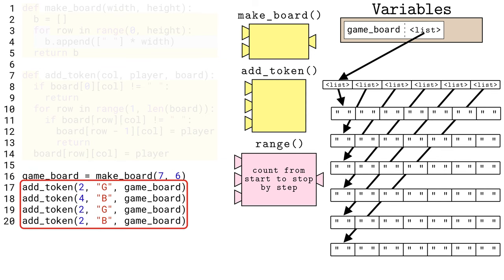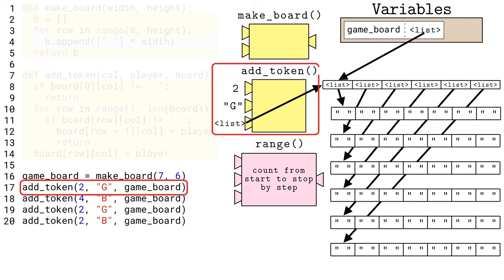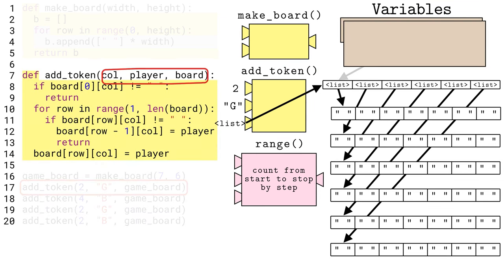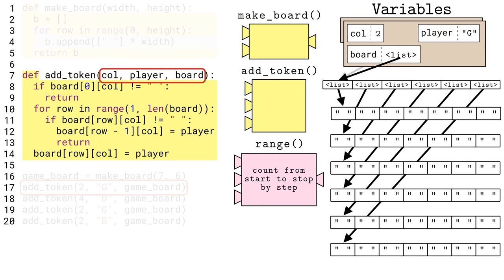Now to add player tokens to this empty board. Remember that a token will fall in from the top and either land on the bottom of the board or some existing tokens. The code in the addToken function needs to emulate that behavior. Line 17 calls the addToken function to simulate the green or G player putting a token in the third column. That is column index 2 because Python lists start counting at zero. The code in the function starts after all the parameters are copied into the function. The variable col, or col, is shorthand for column.